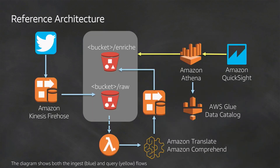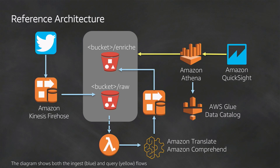Let's talk about how the architecture works. You have the Twitter API with something called the Streaming API — a long-lived connection where you say I want to track the following list of topics and Twitter sends you a JSON payload of matching tweets. We put that into Kinesis, which is our streaming service for handling a tremendous amount of data.